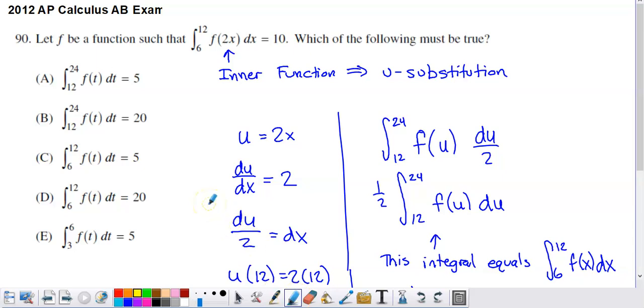This will be problem number 90 from the 2012 AP Calc AB exam. It's a calculator question. The calculator is really not all that useful here. Most of the work is going to have to happen without the calculator. And what they say is that f is a function such that the integral from 6 to 12 of f of 2x with respect to x is equal to 10, which of the following must be true.